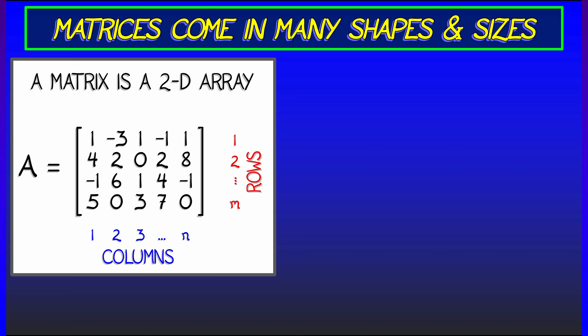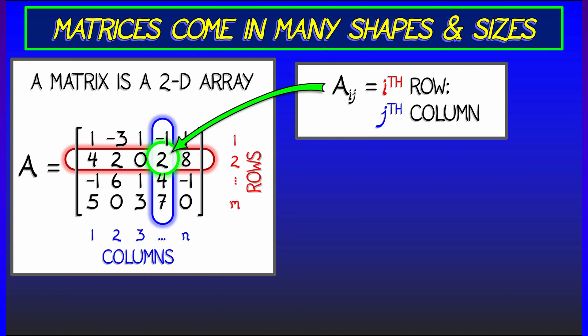To specify the entries of a matrix, you have to specify both the row number and the column number. We'll use subscripts for this. For example, a sub i j is the term in the i-th row and the j-th column.